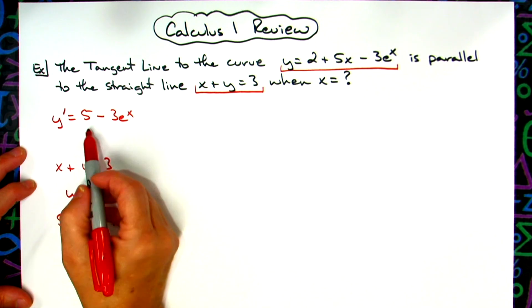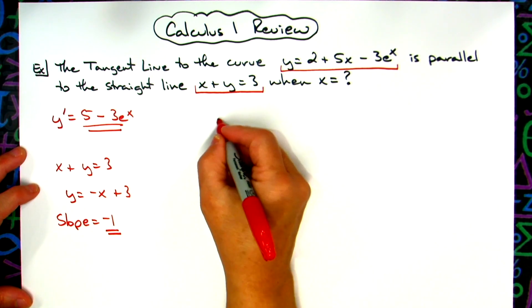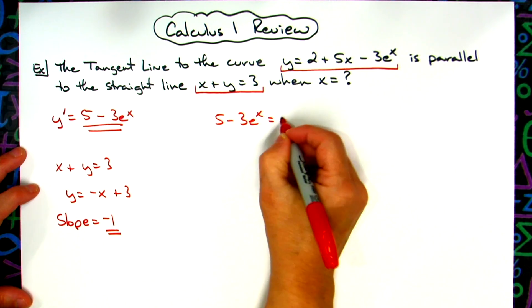So now what I can do is take this and set it equal to my slope, solve for x, and I'll have the point at which the two lines are parallel. So I'm going to have 5 - 3e^x = -1.